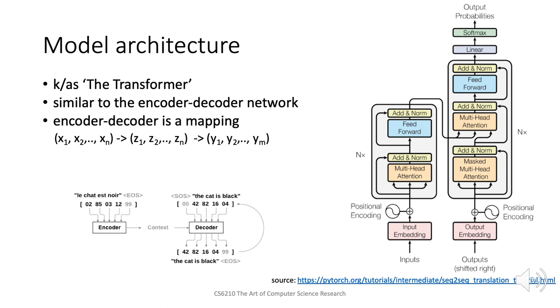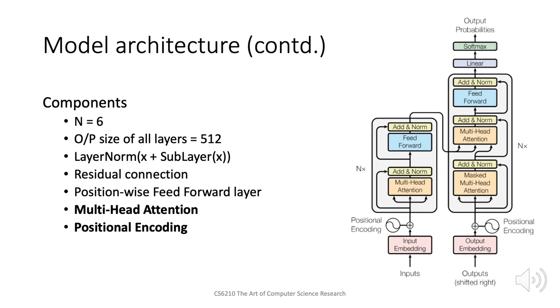This is the model known as the transformer which is proposed here. It is similar to the encoder-decoder network. The left side of the architecture forms the encoder and the right part forms the decoder. These are the major components of the transformer architecture. The multi-head attention and the positional encoding forms the most important components of all.